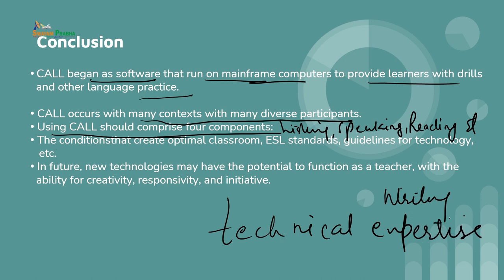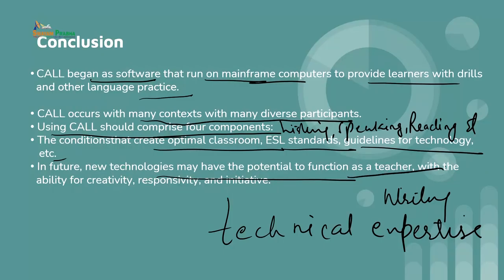The conditions that create an optimal classroom, ESL standards, guidelines for technology, etc. are also important. Planning and implementation should consider different variables such as cost effectiveness, the feasibility of incorporating technology into the classroom, the location, place and timing that are essential for its implementation. In the future, new technologies may have the potential to function as a teacher with the ability for creativity, responsivity and initiative. At this time, we are considering CALL and the use of technology as a surrogate teacher, but in the future it has the potential of replacing it — though this has taken up many debates. A supervising teacher should always be there to help learners and guide what to go through, how to go through and why, and we can certainly do it by using technology in a more responsible way.